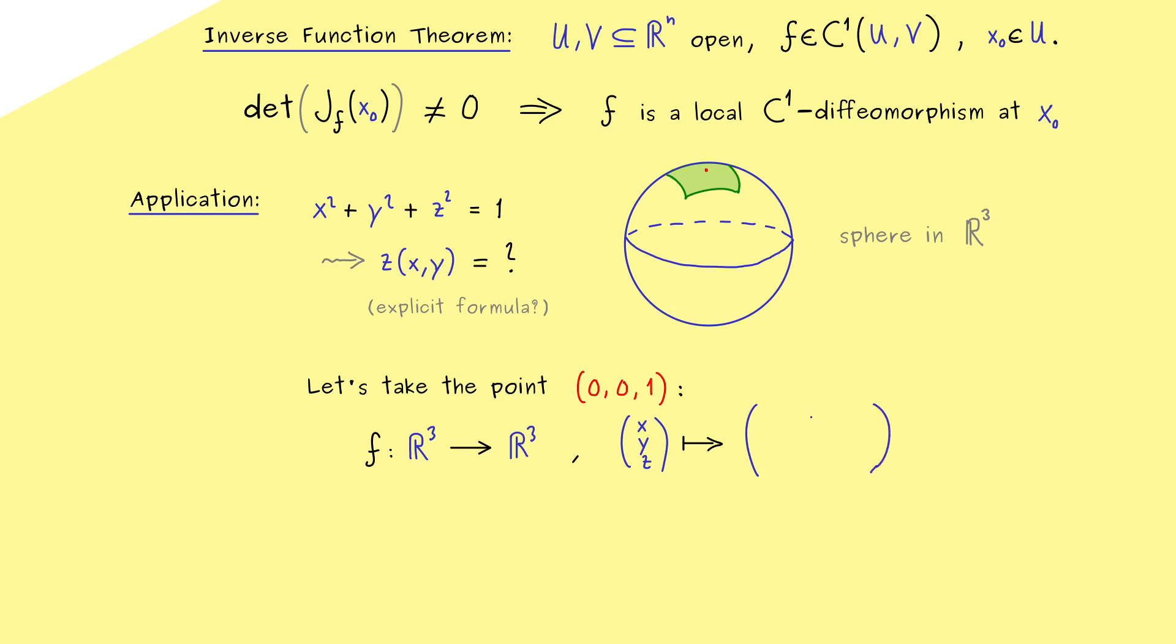Otherwise our inverse function theorem would not be applicable. Hence what we could do is to leave x and y as they are and the last component could be the actual function we need. This means there we put x² + y² + z².